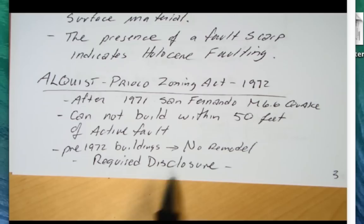It's called the Alquist-Priolo Zoning Act of 1972. It states that you cannot build within 50 feet of an active fault. If your building was made prior to 1972, then there's no permits for remodeling, not even a remodel.